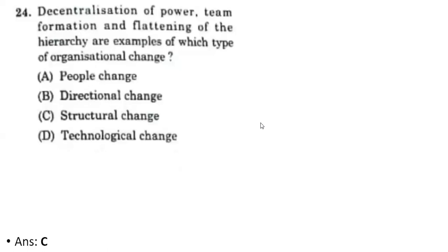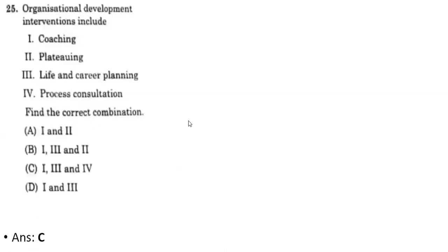Twenty-fourth question: decentralization of power, team formation, and flattening of the hierarchy are examples of which type of organizational change? The correct option is structural change. Twenty-fifth question: organizational development interventions include C — coaching, life and career planning, and process consultation — that is options one, three, and four.